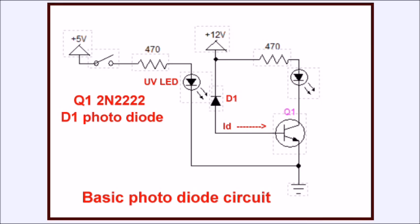Alright, this is a very simple circuit. I wired this up and it works. Basically, I close the switch, my UV LED will light up. Here I have a photodiode D1. I have the cathode connected to plus 12 volts and the anode goes to the base of an NPN transistor. What happens is when light falls on the photodiode from the LED, I suddenly get a leakage current that switches on Q1 and lights up the LED in the collector circuit. That's basically it.